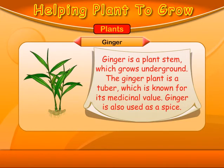Ginger. Ginger is a plant stem which grows underground. The ginger plant is a tuber which is known for its medicinal value. Ginger is also used as a spice.